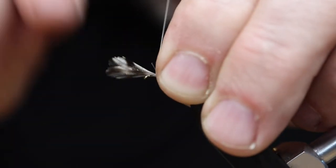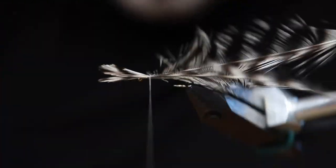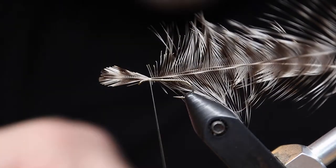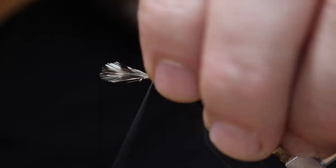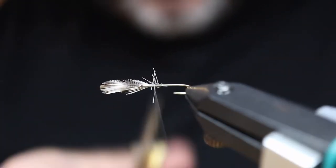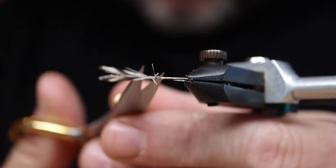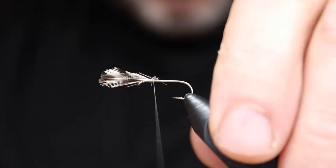Tying in two grizzly hackle tips. The original used - Halliday raised Plymouth rock and Rhode Island red roosters to use for his tying. Plymouth rock would be basically your grizzly, the Rhode Island red, your dark brown, reddish brown.